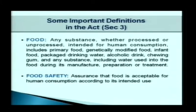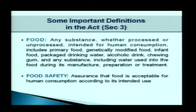There are about 100 sections in the Food Safety and Standards Act. Section 3 deals with definitions of important terminology. Food is defined as any substance whether processed or unprocessed intended for human consumption, including primary food. Primary food is defined as produce of agriculture, horticulture, or animal husbandry, though primary food in the hands of farmers or fishermen is not covered under the purview of the act.